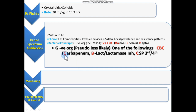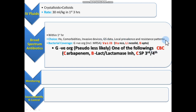C stands for Carbapenem, B for beta-lactam/beta-lactamase inhibitors like Piperacillin-Tazobactam and Ticarcillin-Clavulanate, and C for Cephalosporins third or fourth generation. If Pseudomonas is less likely, we choose one drug from VALID and one drug from CBC.